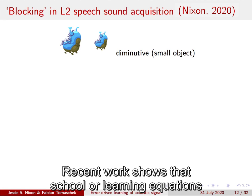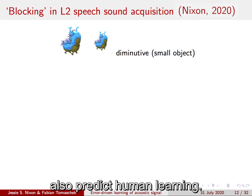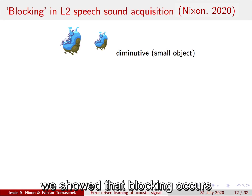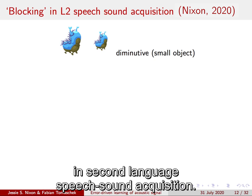Recent work shows that the Rescorla-Wagner learning equations also predict human learning. For example, in a study just published this year, we showed that blocking occurs in second language speech sound acquisition.